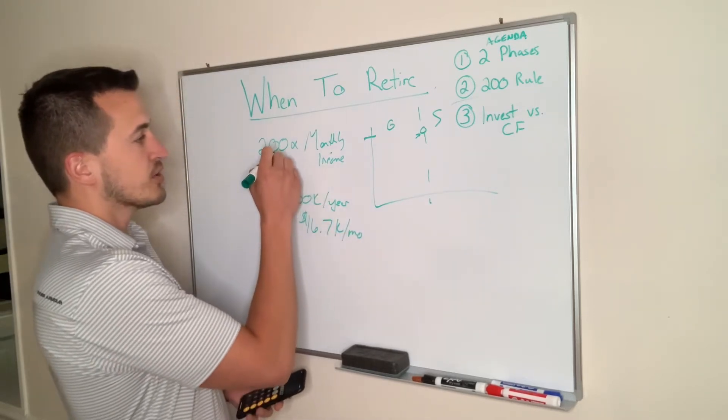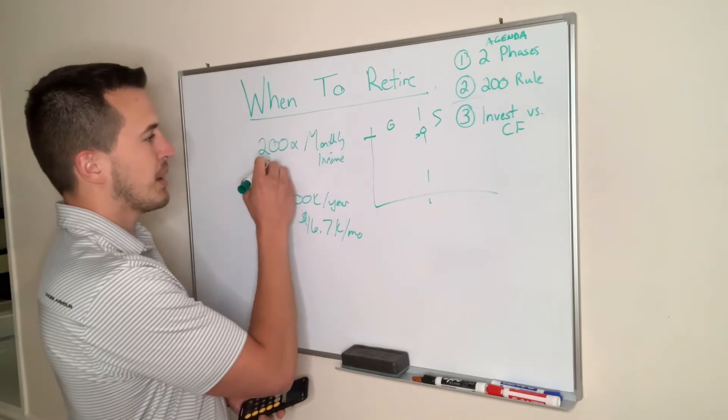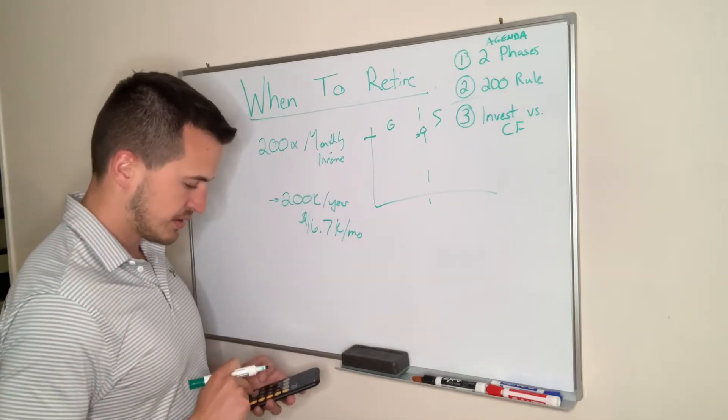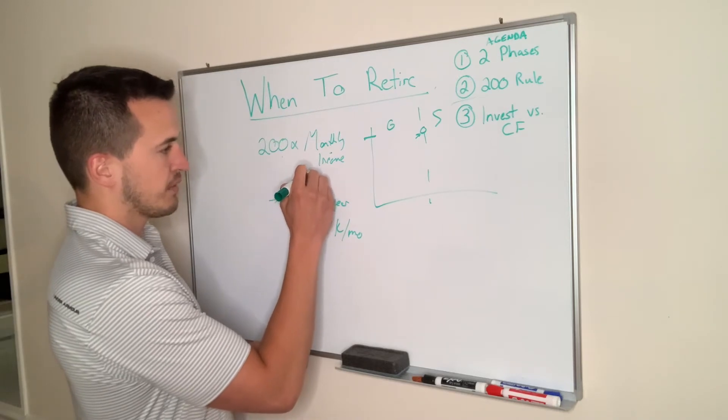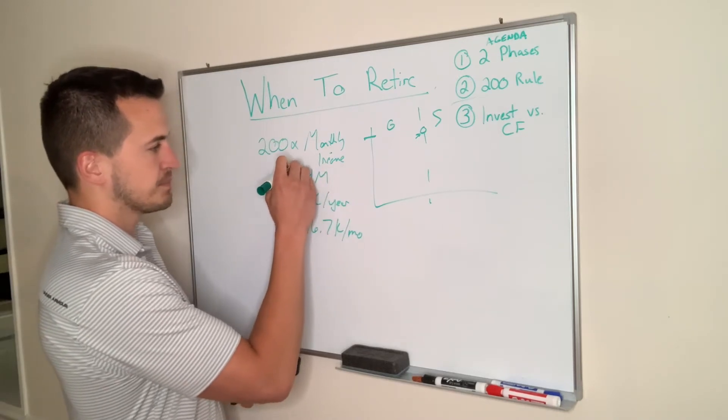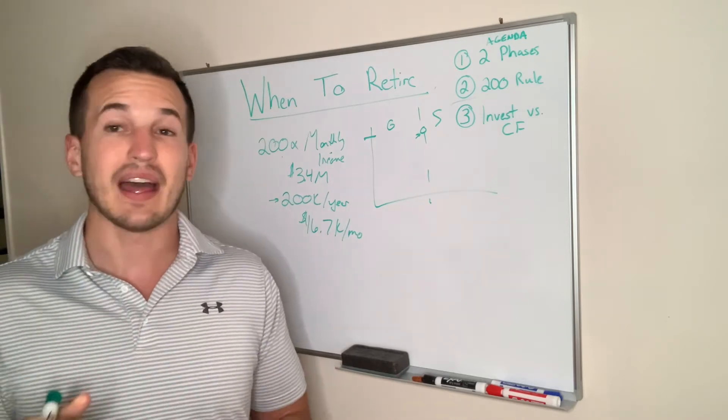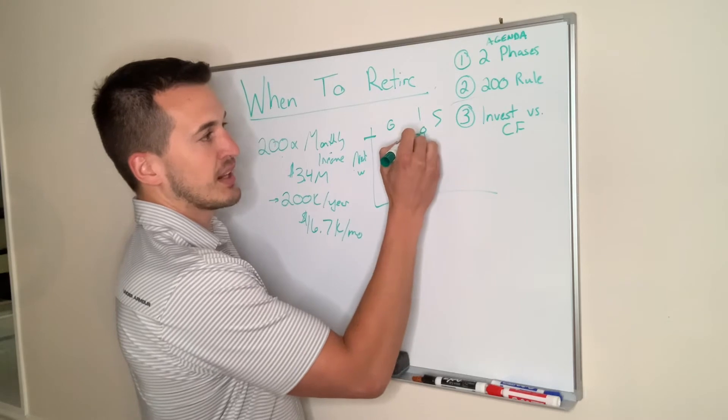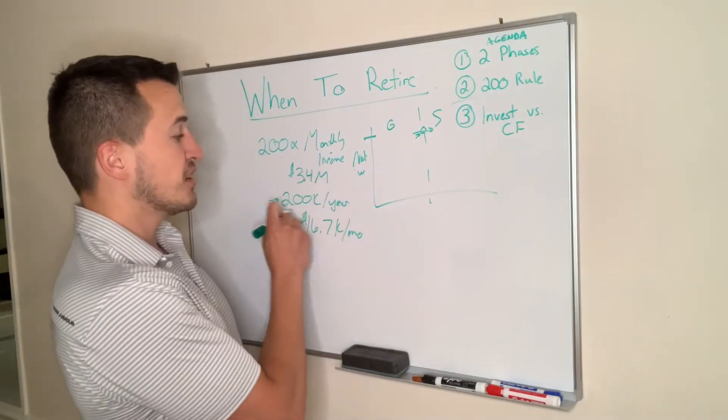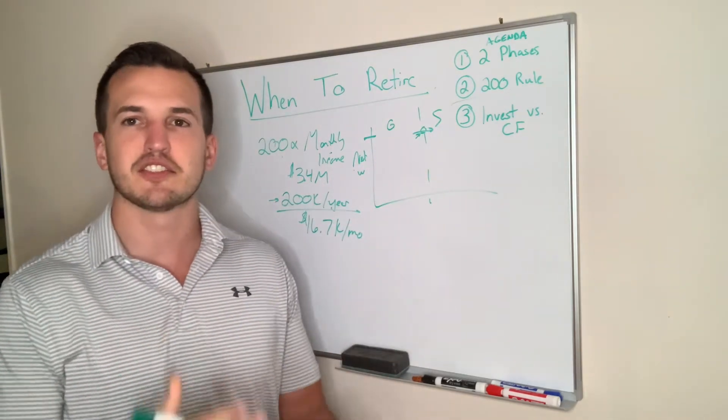Now what you need to do is multiply that by 200, and that is going to be $3.4 million. So that is the number that you need from that net worth perspective to transition, assuming you need 200k a year into the sustain phase.